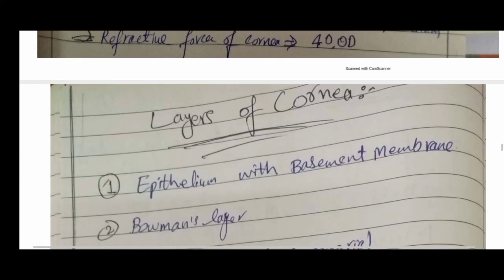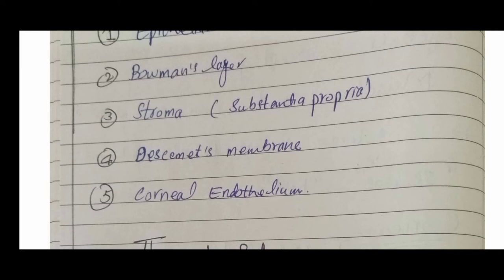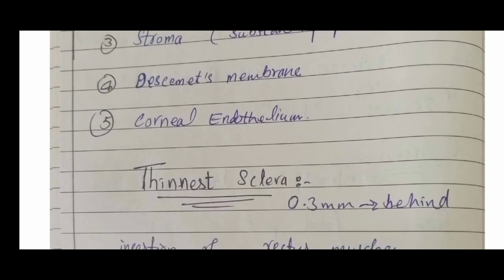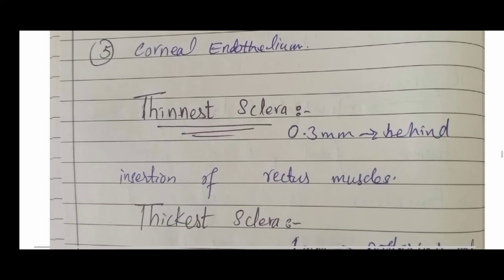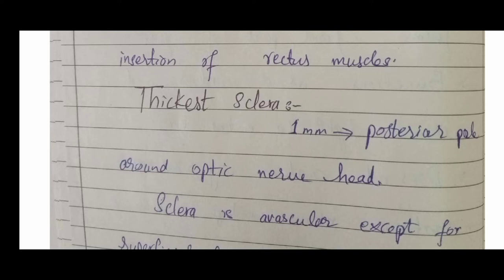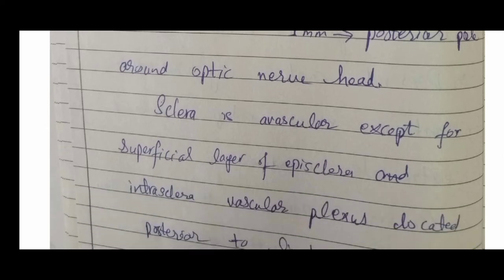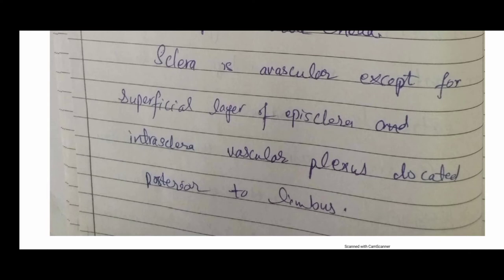There are five layers of the cornea: the epithelium layer with basement membrane, the Bowman's layer, the stroma (substantia propria), Descemet's membrane, and the corneal endothelium, arranged from outer to inner. The sclera has two categories of thickness: the thinnest at about 0.3 mm behind the insertion of the rectus muscles, and the thickest at about 1 mm posterior to the posterior pole around the optic nerve. The sclera is avascular except for the superficial episcleral layer, which has vascular structures.